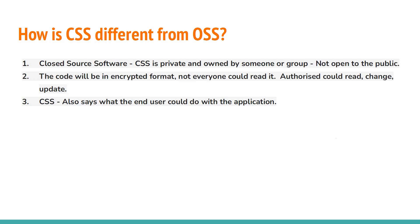How is CSS different from OSS? CSS is private, owned by a particular person or group — it is proprietary and not open to the public. The code is in encrypted format. Only people with authorized legal access can read, change, or update it. CSS also clearly defines what the end user can do with the application. These are the major differences between CSS and OSS.